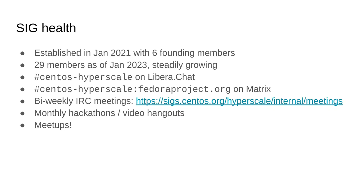We hang out on IRC, Libera.Chat in #centos-hyperscale, which is also bridged to Matrix. Most of us are in the US, so if you're in Europe, it might take a while to get a response. We have bi-weekly meetings that are recorded and you can find the minutes there, though I think I forgot to update that page for a while so you might be missing the last two or three. We also do monthly hackathons and video hangouts, which we found really useful to foster social interaction between folks — usually a mix of people doing actual work and general chit-chat.